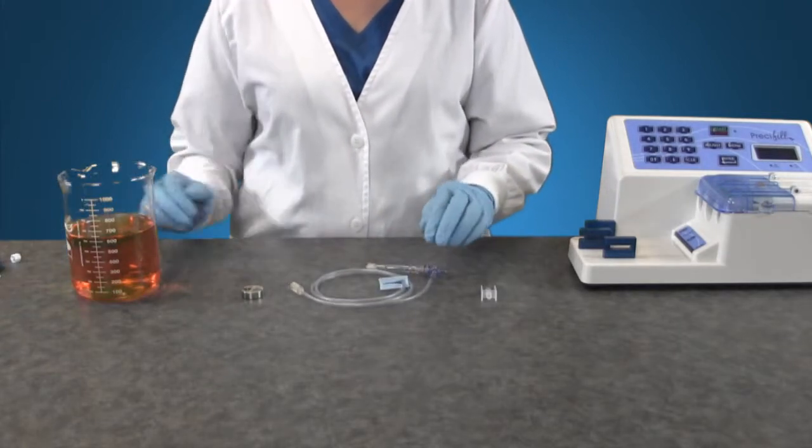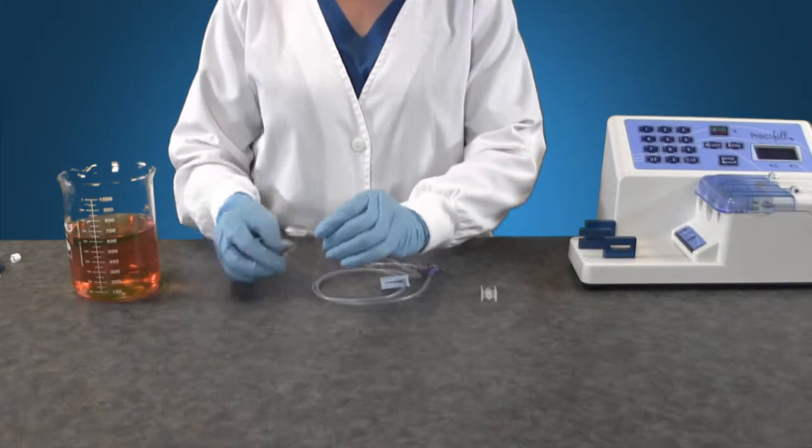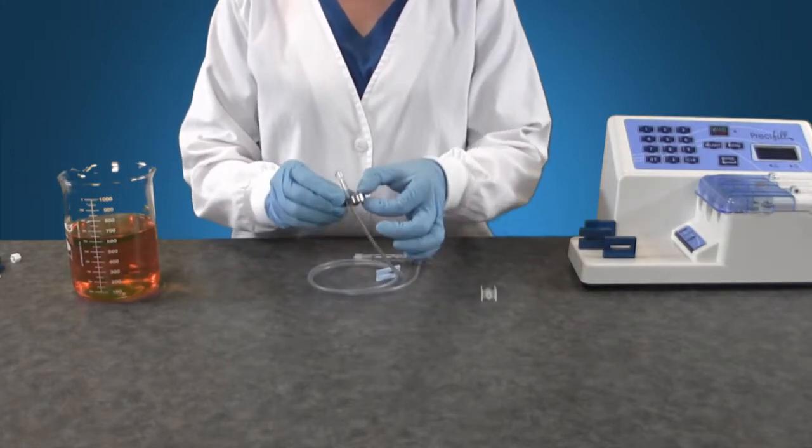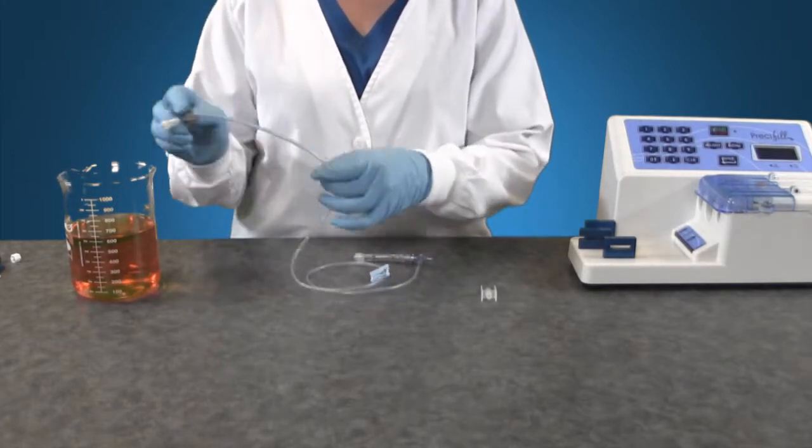Discard the three end caps as well as the white paper packaging. You only need the tubing set. Attach the metal anchor onto the long end of the tubing set and place into the glass beaker with the solution.